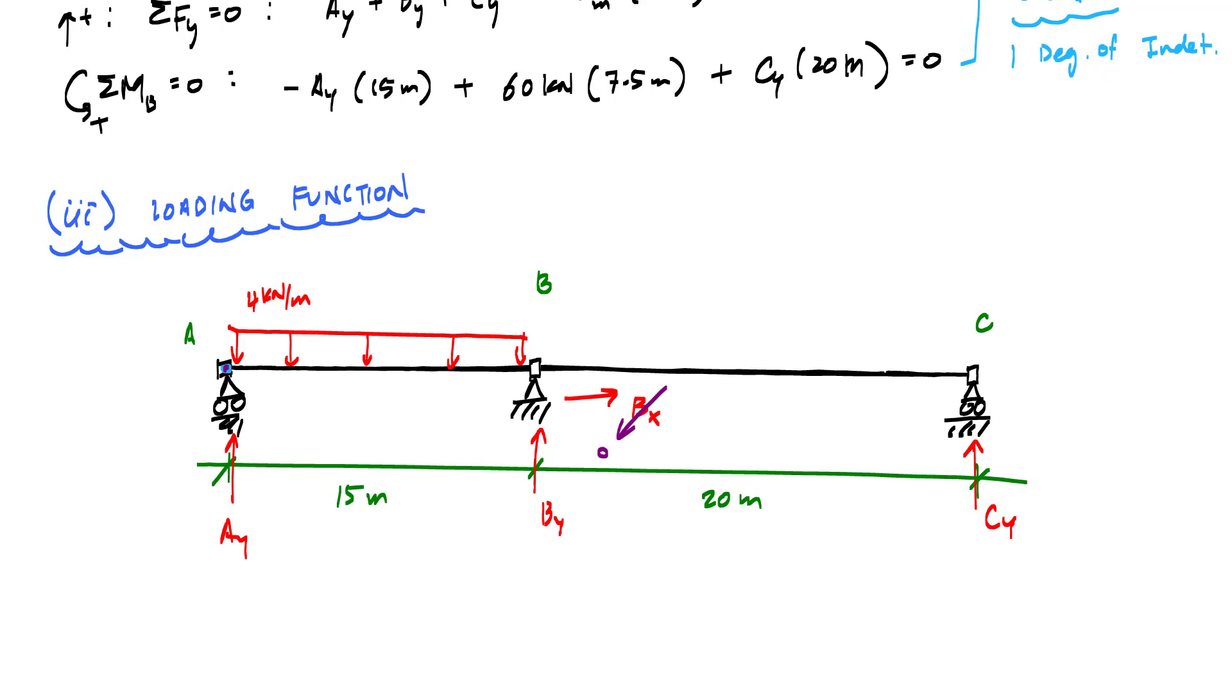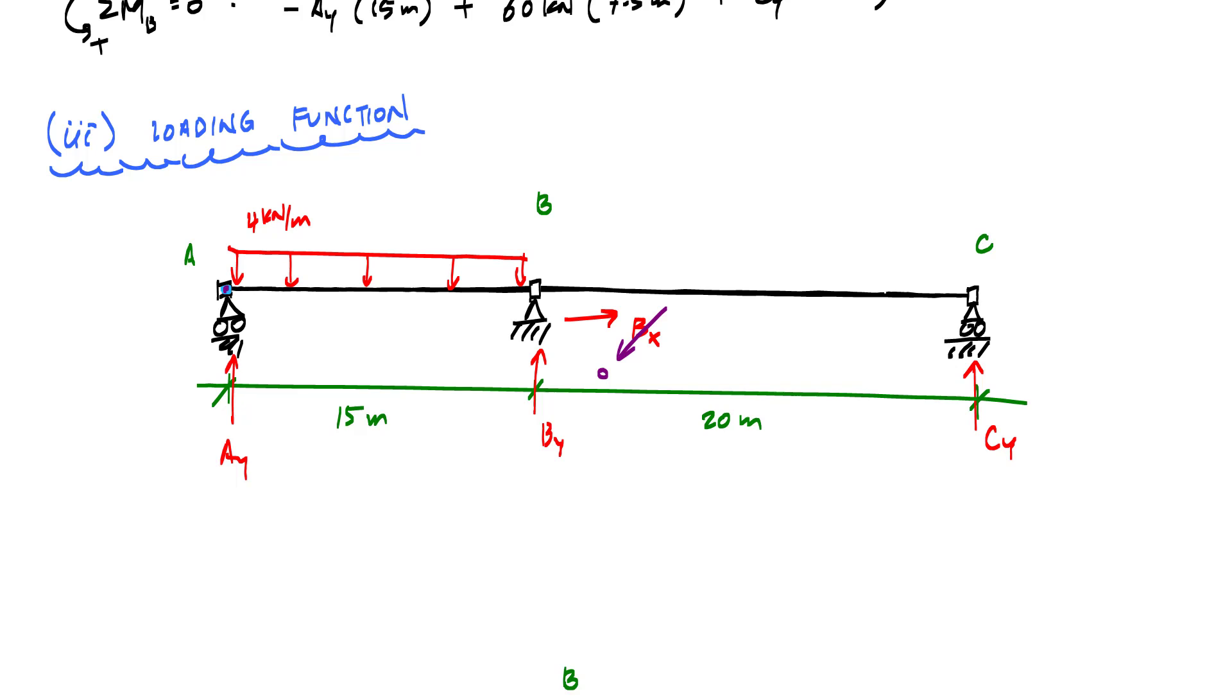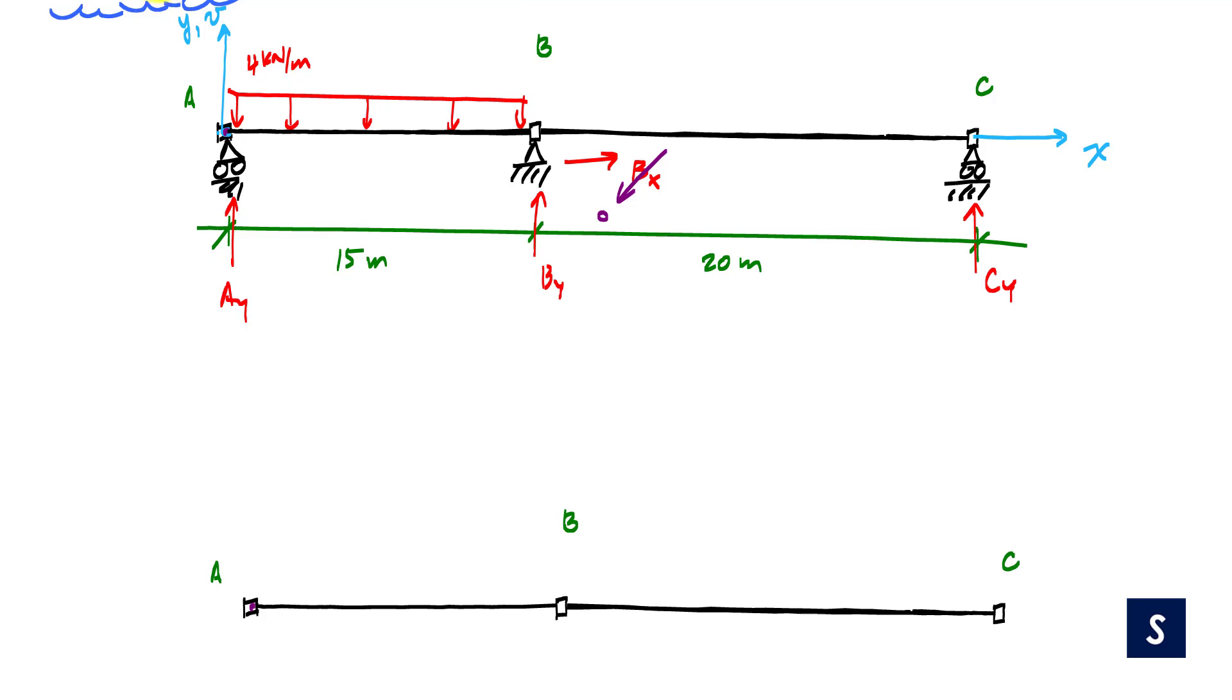The thing we want to do now is describe the loading that's acting on the beam, including the support reactions using our singularity function. So we're gonna have one equation for everything that's happening to the beam here. One of the things that we need is an origin because location is important for this equation. And so I'm going to choose my origin at A and I'll be going left to right. I'll call Y or V for vertical deflection for the displacement field. As I write the function, I'll show you what the loading is that we're introducing to the beam on the bottom.